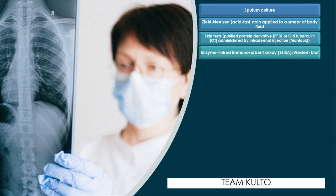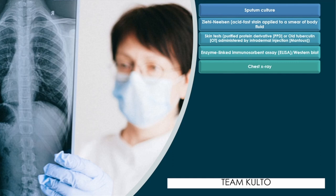Enzyme-linked immunosorbent assay (ELISA) or Western blot may reveal presence of HIV. Chest x-ray may show small patchy infiltrations of early lesions in the upper lung field — again, because this is an aerobic bacteria. Calcium deposits of healed primary lesions, or fluid of an effusion, may also be seen. Changes indicating more advanced TB may include cavitations, scar tissue, or fibrotic areas.